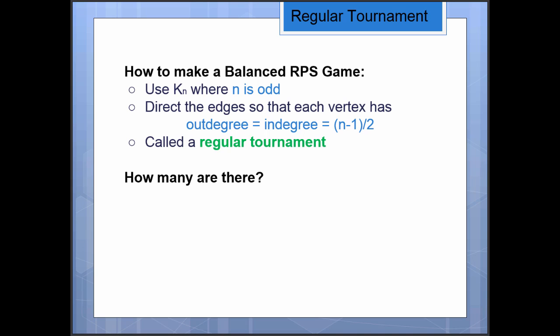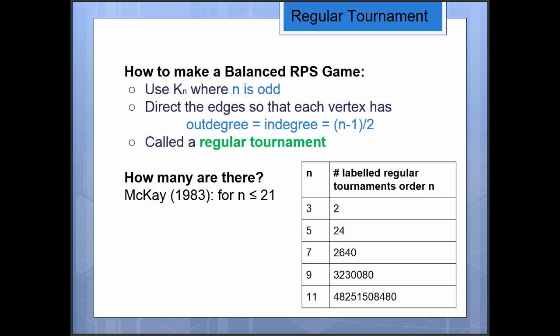You might wonder how many are there. This question was answered in 1983 by Brendan McKay, where he showed for values of n that are odd up to 21, he calculated exactly the number of labeled regular tournaments of that order. I've only just written down the first few of these in this table because they grow quite quickly. There are lots and lots of these regular tournaments, and we might be wondering: if we have a really nice small one, could we have a method for generating a bigger one so that we don't need to look into a database of millions of these things? What if we already have one of size three? How can we build one of size five? Well, we've already done that, so let's take a look at the next step.